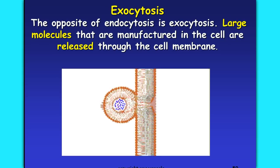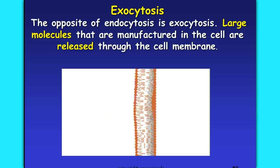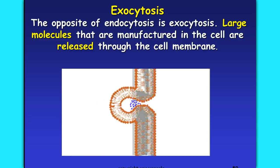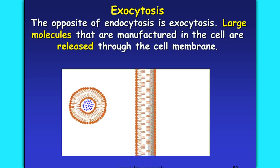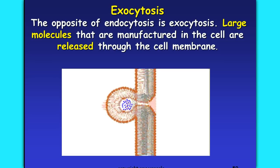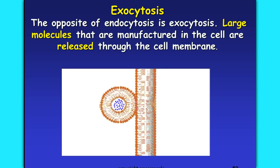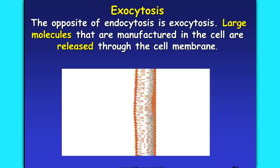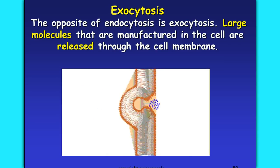Make sure you've got a definition down for exocytosis — the movement of large molecules manufactured in the cell that then have to be released through the cell membrane. This is the end of this unit. We're going to do some activities based on these concepts, and then we'll be ready to test.